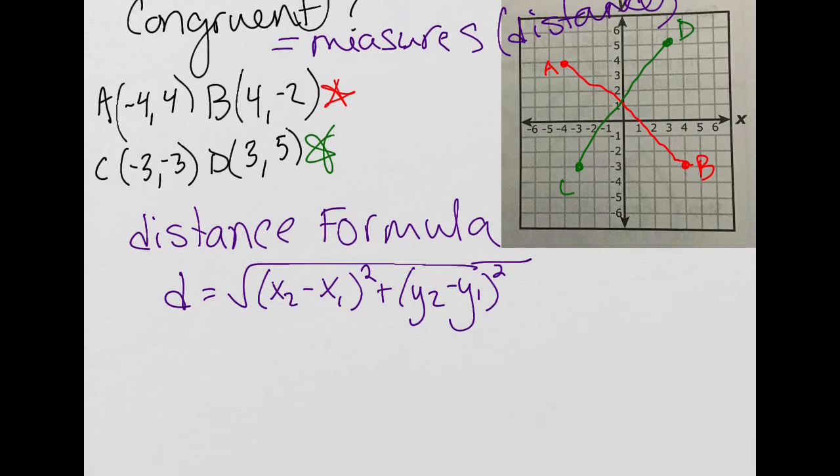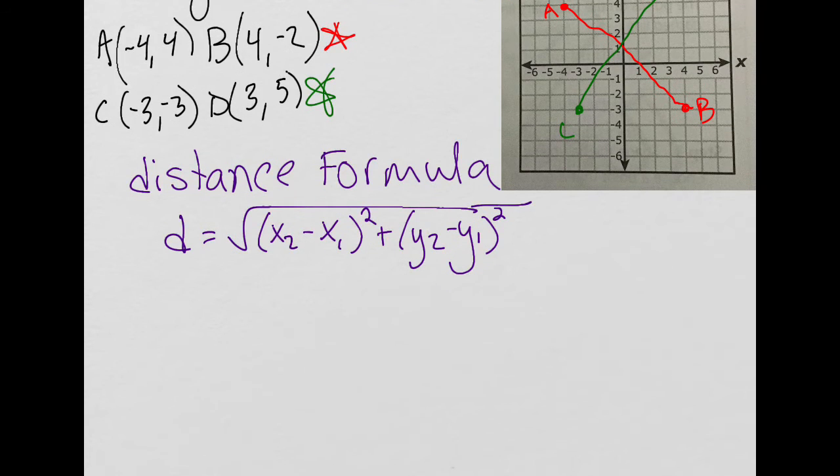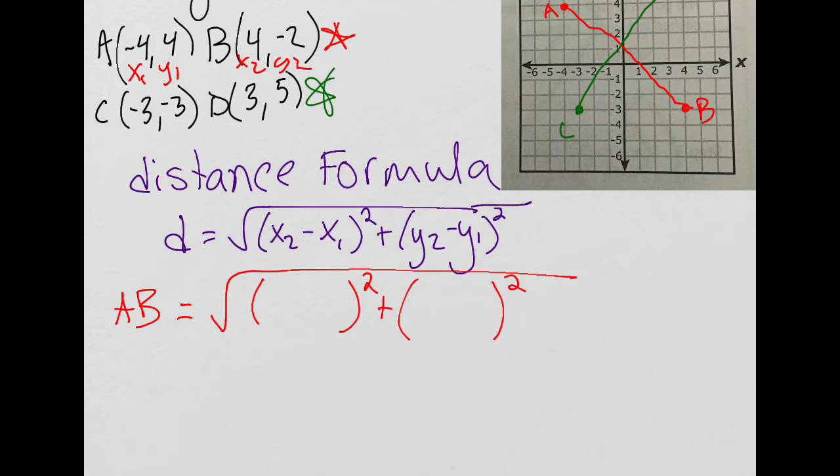Okay, so the length or distance of AB. Again, I'm going to go ahead and label x1, y1, x2, y2. And then I'm going to fill out the formula. So it has a distance formula, it has two sets of squares with a sum in between, and then each set has a minus. I like to call this the bones of the formula without any numbers.